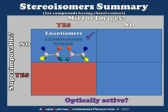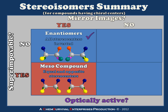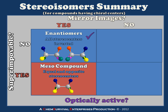In our second set of conditions, we're dealing with superimposable mirror images. When this is the case with a compound containing chiral centers, we're dealing with a meso compound. Meso compounds are characterized by having equal and opposite stereocenters within the molecule. Reflecting the molecule creates an exact copy, so a meso compound is not really a set of molecules but a single molecule. Because it has a mirror plane, we do not expect it to be optically active.